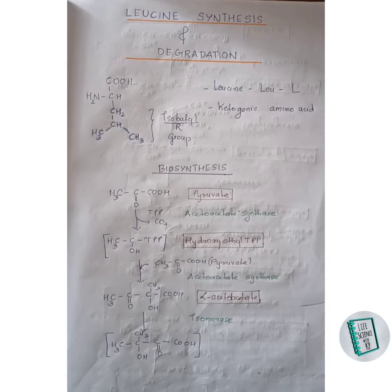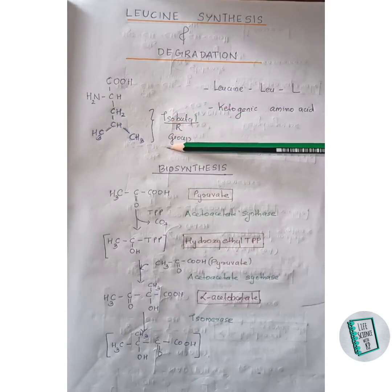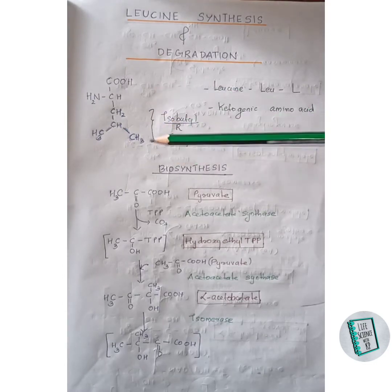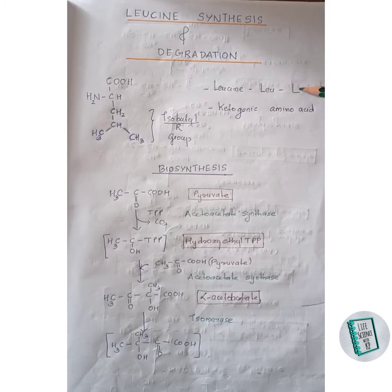Welcome back. Today we will be discussing the synthesis and degradation of leucine. Leucine is a branched-chain amino acid with an isobutyl R group in its structure. It is represented by the three-letter code Leu and the single-letter code L. It is a ketogenic amino acid because its degradation leads to the formation of acetoacetate and acetyl-CoA.